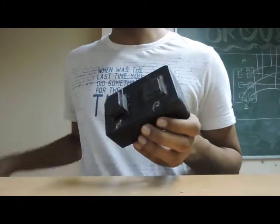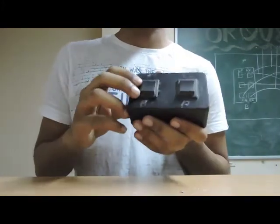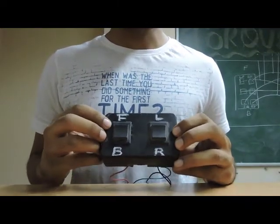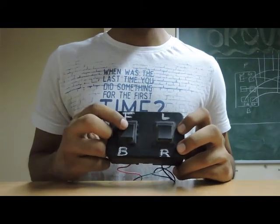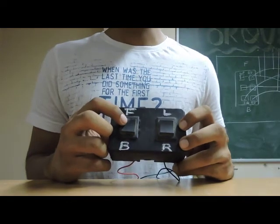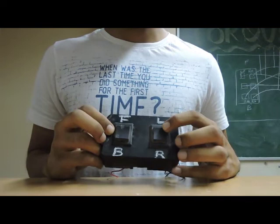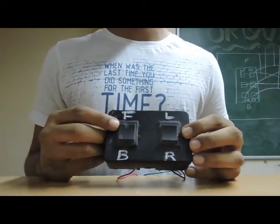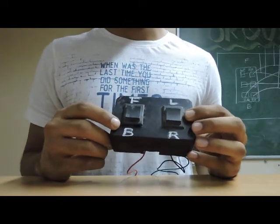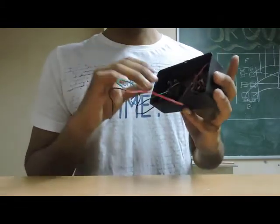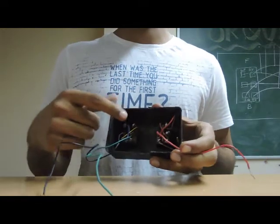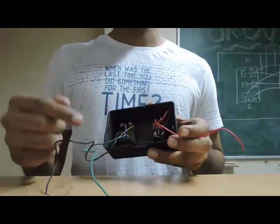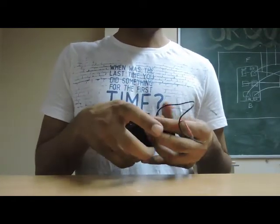Now how will we build our board? We can start from the output then processing unit then remote, or from the remote then processing unit then output. I will start from the remote — placing the DPDT switches on the remote case. Take one DPDT, press it into the hollow case. We have marked each switch with forward, backward, left, and right commands. When we press the upper switch it is a forward command, lower switch is backward, and the second DPDT's upper switch is left and lower is right.